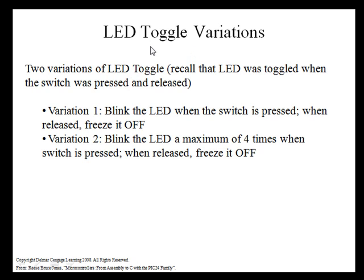Let's try a couple of simple variations of the LED toggle program. Recall the LED was toggled whenever the switch was pressed and released. Our first variation is going to blink the LED when the switch is pressed. When it is released, we're going to freeze it off. The second variation is going to blink the LED a maximum of four times when the switch is pressed, then when it's released, freeze it off.